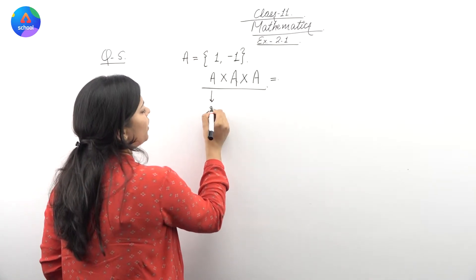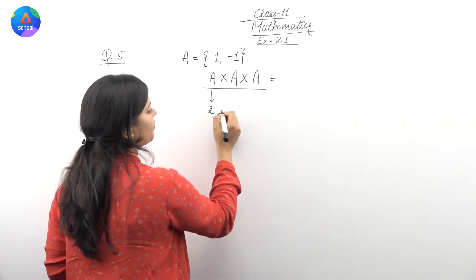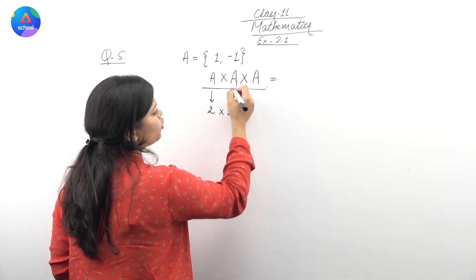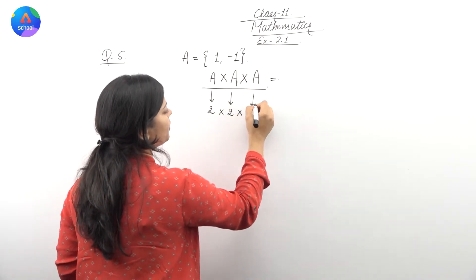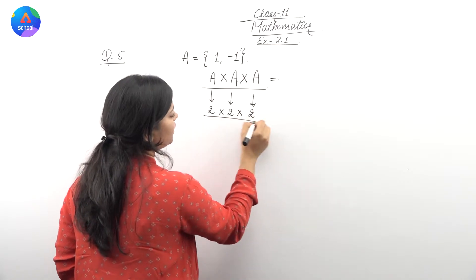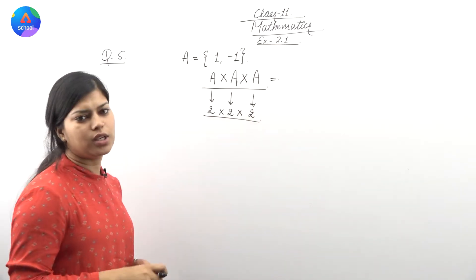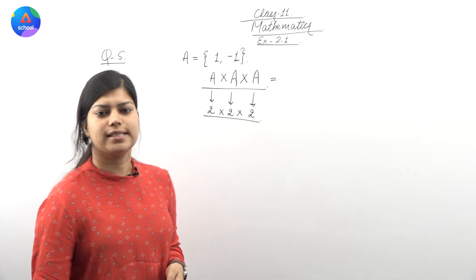Yaha par humare paas do elements hai set A mein. Uske baad next set joh hai second set, wou bhi set A hai, to usme bhi two elements hai, aur yaha par bhi two. To basically, yaha par humare paas elements honne chahiye, two into two into two, that is eight.